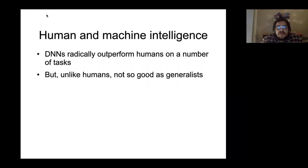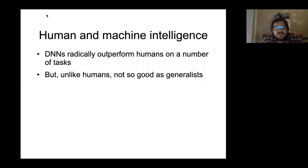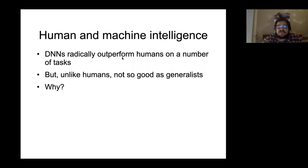Current machine learning algorithms like deep neural networks are doing a great job at radically outperforming humans on all kinds of tasks. They're better at playing any individual game than a human with enough training, and better at maybe doing any individual task than a human with enough training. But unlike humans, they're not so good as generalists.